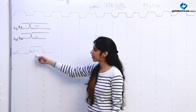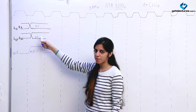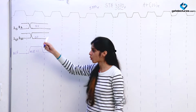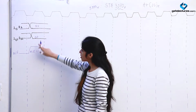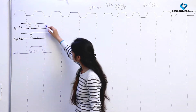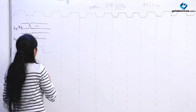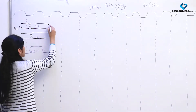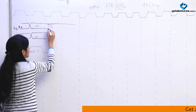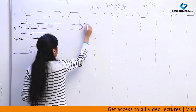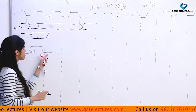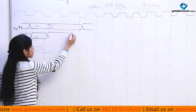We have already seen that unless we make ALE high, this bus is not going to act as the address bus. This is a multiplexed bus — it can act as address bus as well as data bus. When we want to use it as address bus we have to make ALE high. As soon as we make ALE high, this acts as the address bus and address 5000 is placed there. When ALE goes low, this bus is going to act as the data bus.